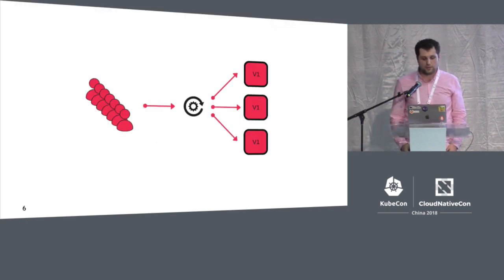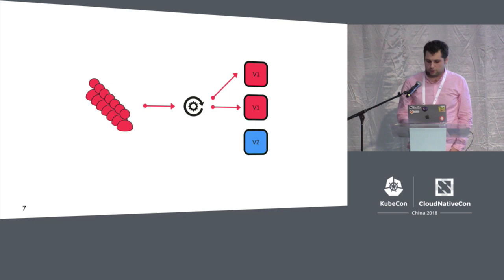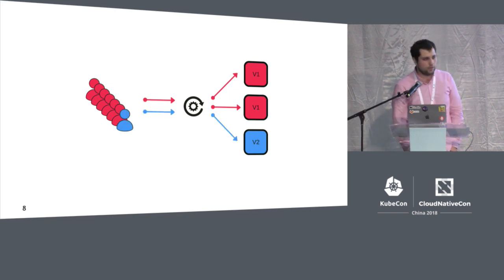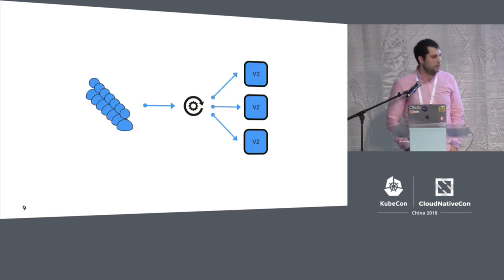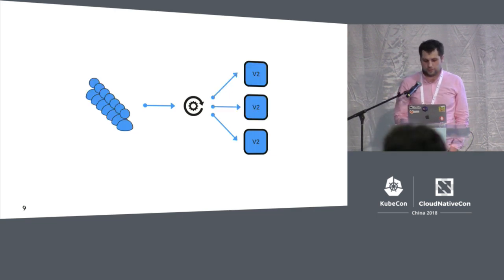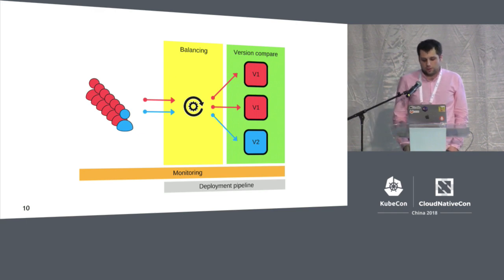Let's see how it works. We have a version we want to deploy — we remove it from the balancer, change the version, then return it to the balancer for only a restricted set of users. If that's okay, we deploy another version to the remaining instances. To achieve this, we need balancing, monitoring, version comparison, and a deployment pipeline.